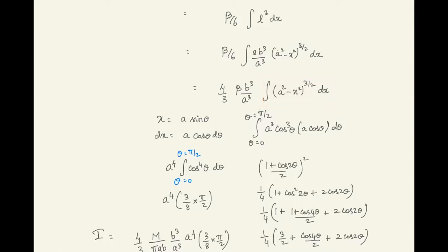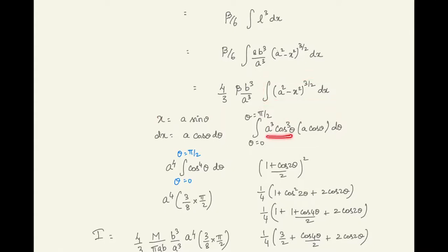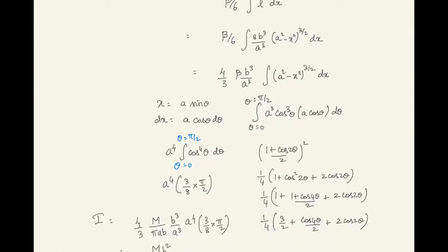To evaluate that integration we use the substitution x = a·sinθ. Differentiating: dx = a·cosθ·dθ. The limits change accordingly: when x = 0, θ = 0; when x = a, θ = π/2. Substituting, (a² - x²)^(3/2) becomes a³·cos³θ, and with dx = a·cosθ·dθ, the integral converts to a⁴·∫₀^(π/2) cos⁴θ dθ.